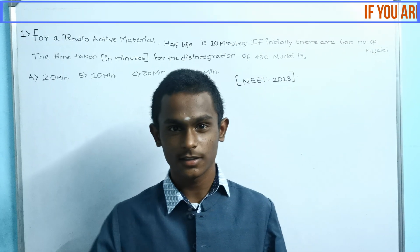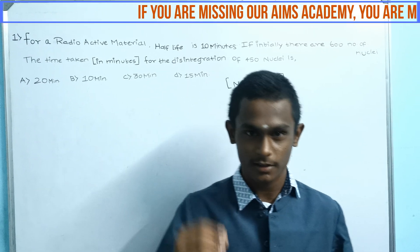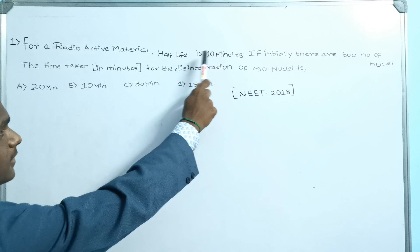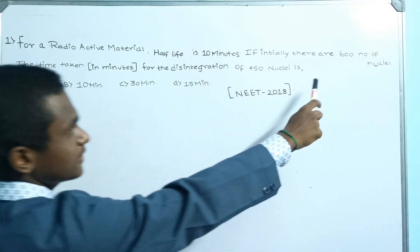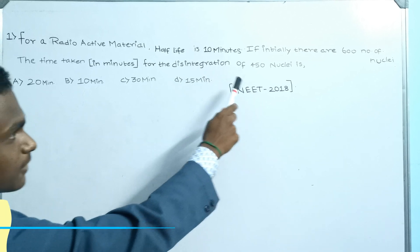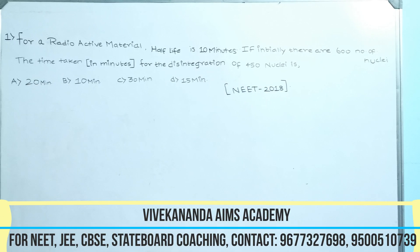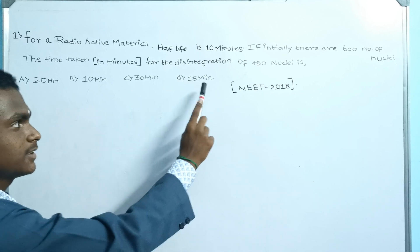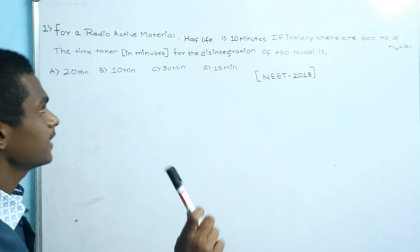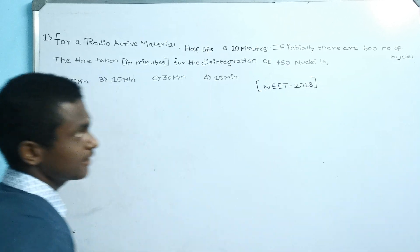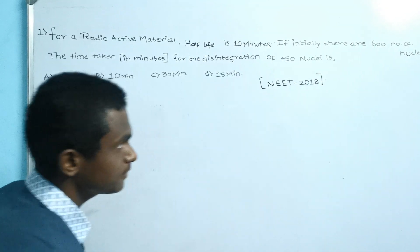Now we are going to discuss a very important question in the chapter nuclear physics which has been asked in the year 2018. The question is: for a radioactive material, the half-life is 10 minutes. If initially there are 600 nuclei, the time taken for the disintegration of 450 nuclei is — option A: 20 minutes, option B: 10 minutes, option C: 30 minutes, option D: 50 minutes. The important points are: half-life is 10 minutes, initial number of nuclei is 600, and the number of nuclei disintegrated is 450.